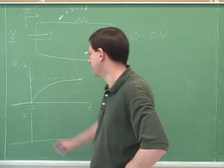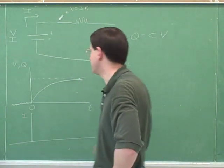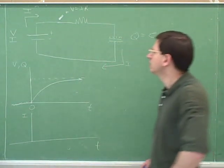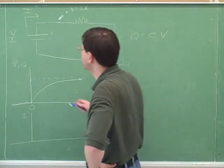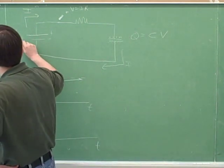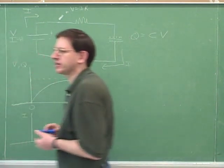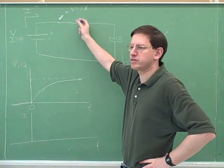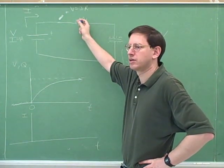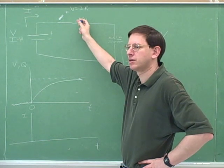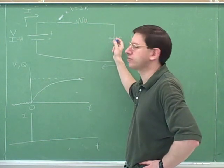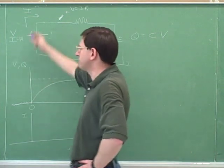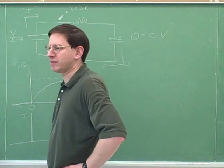Now we're going to do another graph that relates current and time. As a warm up, let's suppose that the battery is delivering 3 amps of current. If the battery were delivering 3 amps of current, what would be the current through the resistor? Three. And the current through the capacitor? Three. When things are in series, they have the same current.